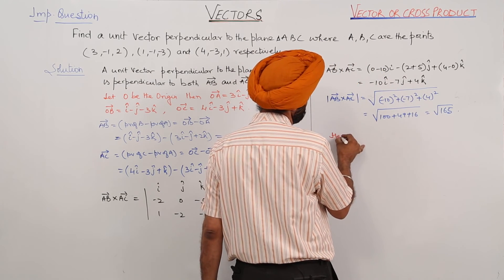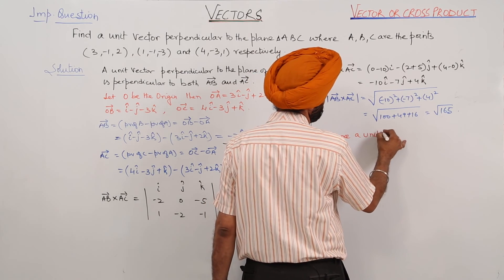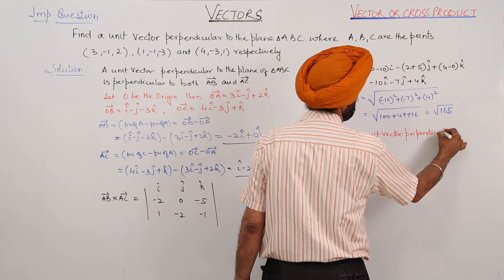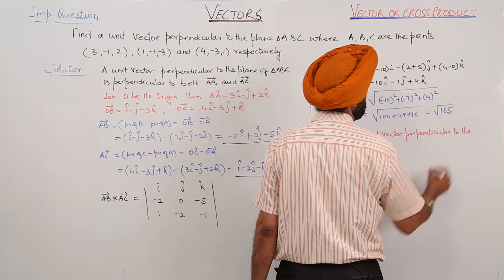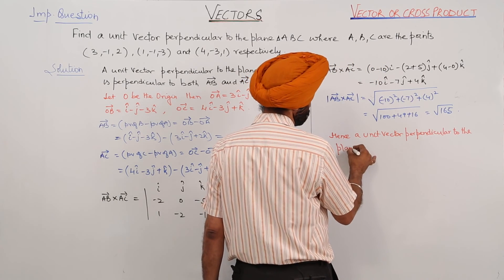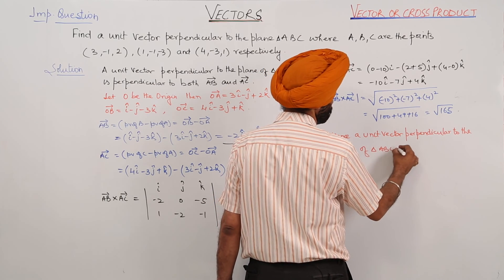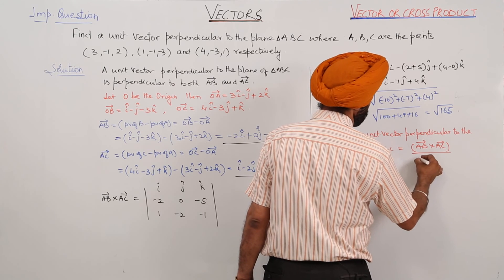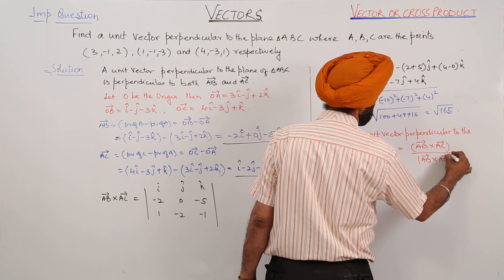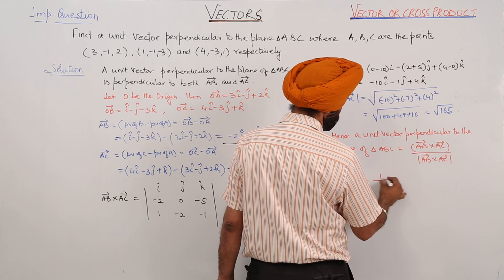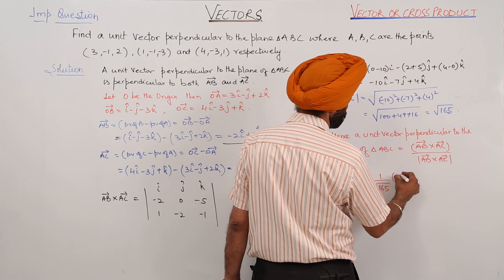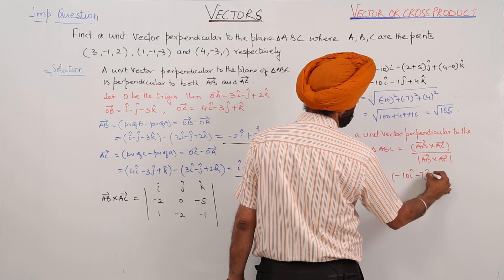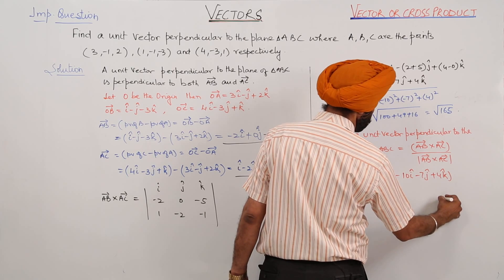Hence, a unit vector perpendicular to the plane of triangle ABC equals vector AB cross vector AC divided by the magnitude of vector AB cross vector AC. This is equal to 1 over root 165, multiplied by minus 10i cap minus 7j cap plus 4k cap. This is the answer.